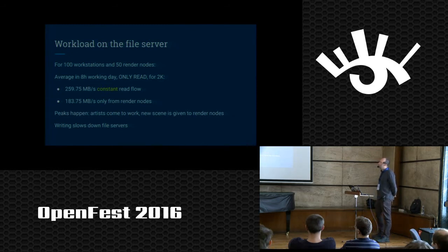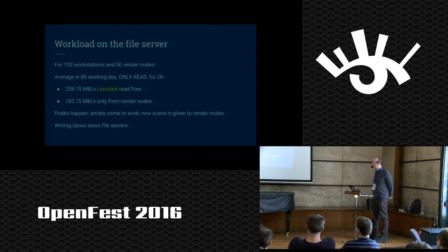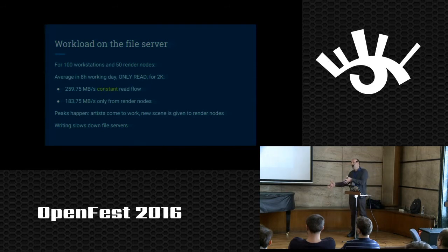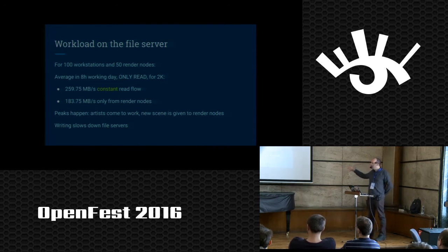Render nodes get a lot of data, and there are also peaks — artists come in the morning and you have a peak as they read everything from the server. A new scene is given to render nodes and they go to the file server to get the data. Writing also slows down file servers significantly. These numbers are only for 2K — if you need 4K, you multiply by three or four. That's a lot of data we have to serve to the artists.